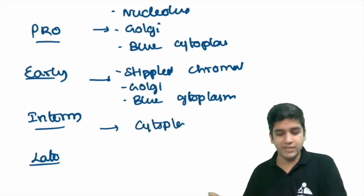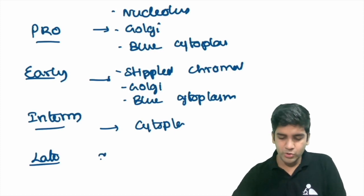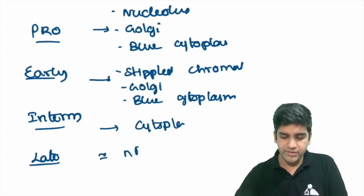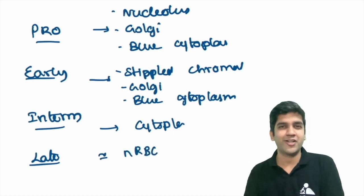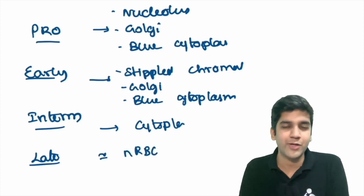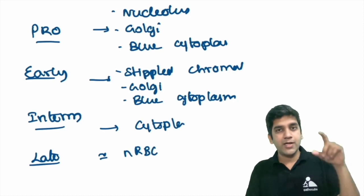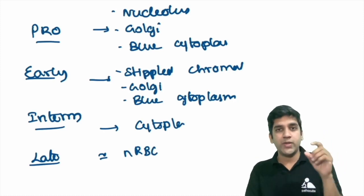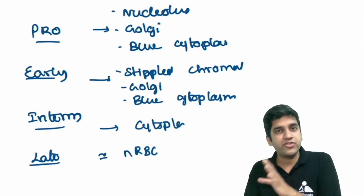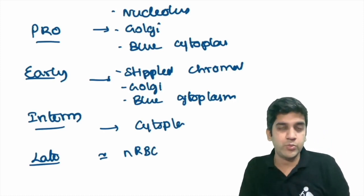The clue for an intermediate normoblast is the cytoplasm — it has a polychromatic cytoplasm, a mixture of red and blue. The late normoblast is similar to an NRBC; it is essentially an NRBC, and from it you create an RBC in the normal pathway.